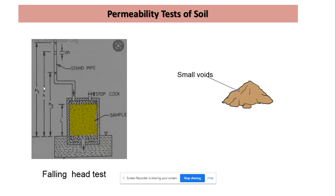On the other hand, for fine grain soil we perform the falling head permeability test. We perform this test by using this type of arrangement where we place the sample, and in the stand pipe we measure the fall in the head of water or liquid.